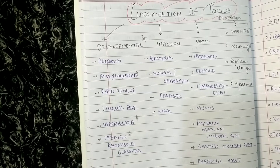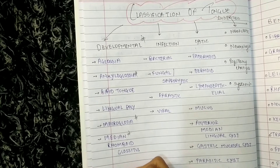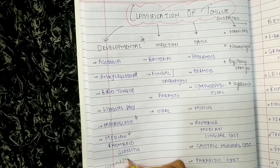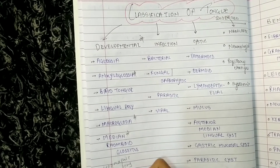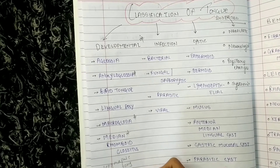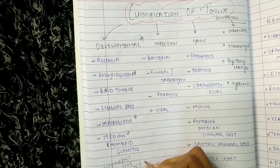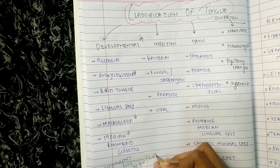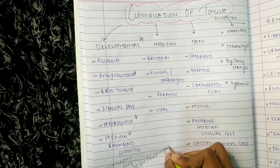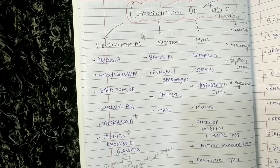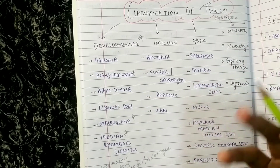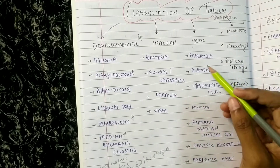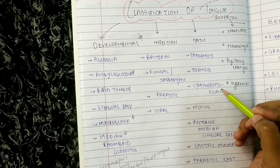We also have median rhomboid glossitis in developmental. Median rhomboid glossitis, ankyloglossia, and macroglossia are very very important. Geographic tongue is important, hairy tongue is important, and depapillation of tongue — also called bald tongue — is also important. All these things I'm going to discuss in this series.